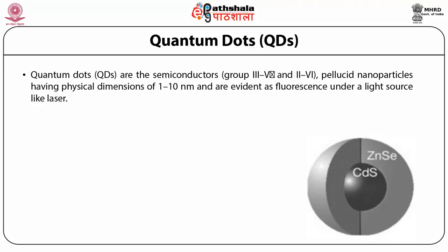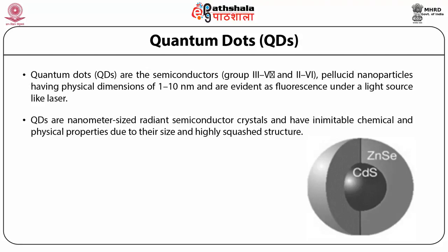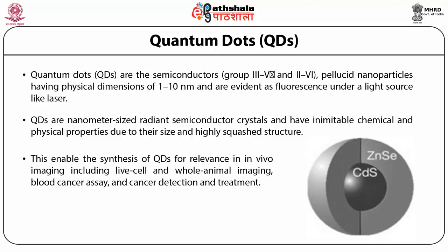These are nanoparticulate materials with a size range of 1 to 10 nanometers and emit fluorescence under a light source like a laser. This nanoparticulate property makes them applicable for different imaging applications. They are currently being investigated for different biotechnological applications. Quantum dots are nanometer-size radiant semiconductor crystals with unique physical and chemical properties due to their size and highly squeezed structure, enabling them for in vivo imaging including live cell and whole animal imaging, blood cancer assay, and cancer detection and treatment.